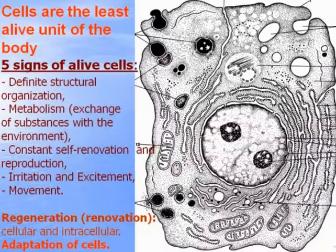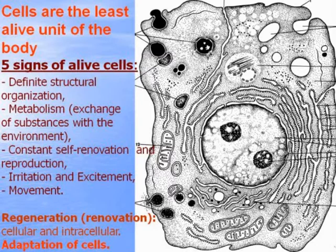Cells are the least alive unit, and there are five signs of cell life: definite structural organization; metabolism — exchange of substances with the environment; constancy and cell renovation; reproduction; and irritation or excitement, especially typical for nerve and muscle cells; and movement — movement of the cell itself and movement inside the cytoplasm.